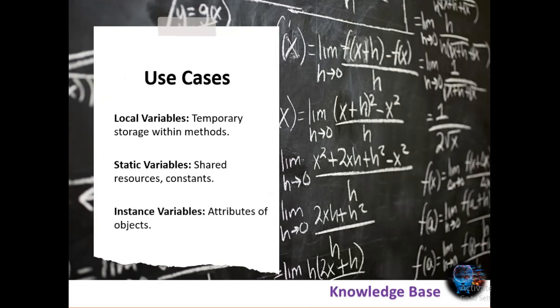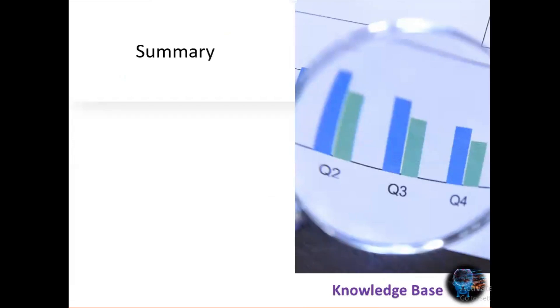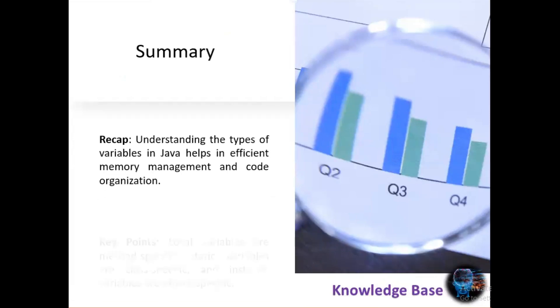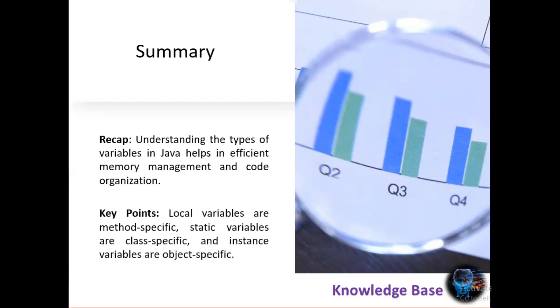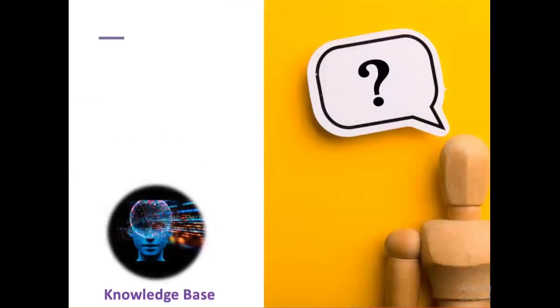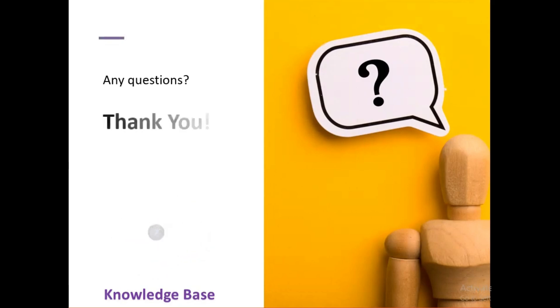To recap: understanding the different types of variables in Java helps with efficient memory management and code organization. Local variables are method-specific, static variables are class-specific, and instance variables are object-specific. By knowing when and how to use each type, you can write more effective Java programs. That brings us to the end of this video. If you have any questions, comment below. Thank you for your attention.